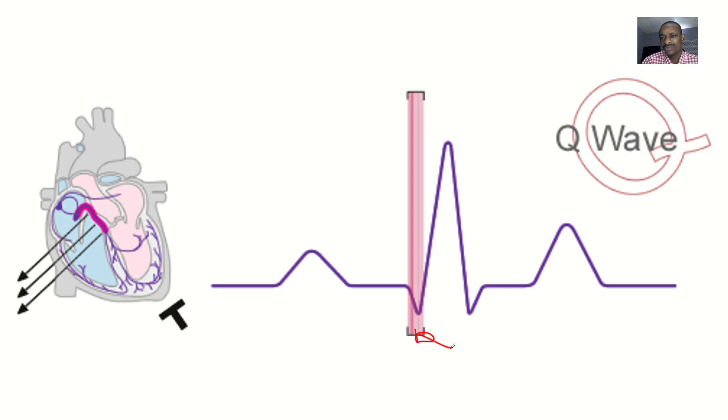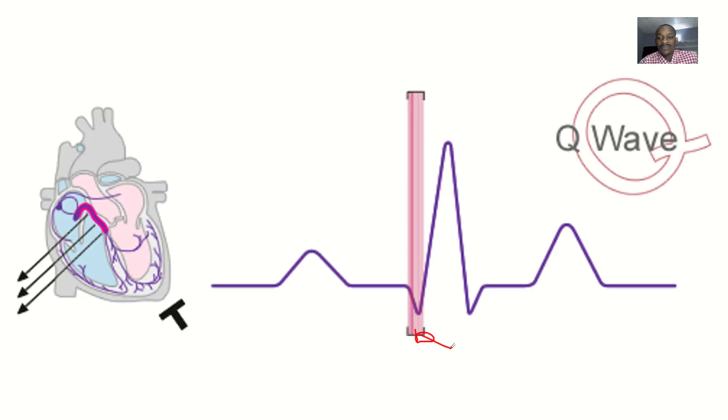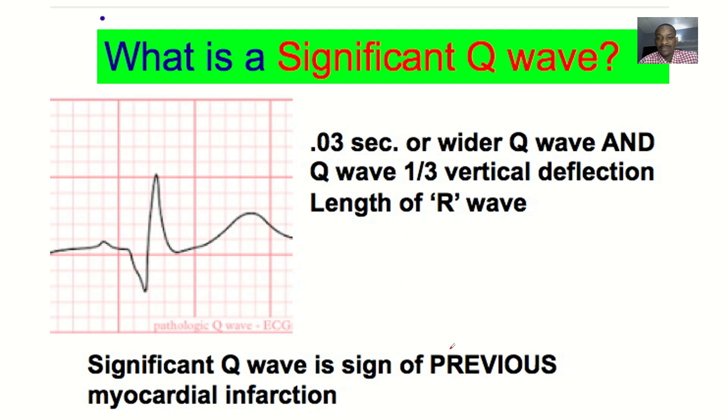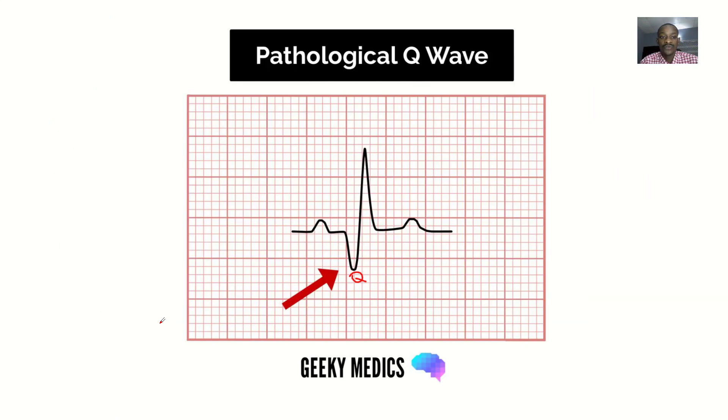We are not just studying the Q wave to know that it's on the ECG. We are trying to look at how a normal Q wave would be like and also looking at what the abnormal Q wave, also known as a pathologic Q wave, would be like. We check how the normal will be and how the one that is in a disease state will be like.